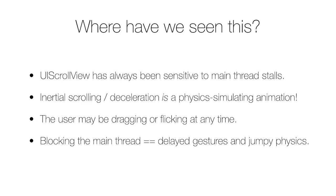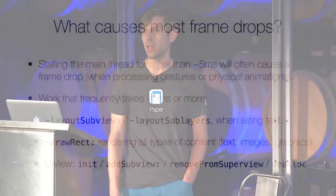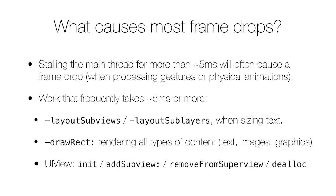Blocking the main thread inevitably results in delayed gesture processing and also jumpy physics. As a general guideline, you're looking at about five milliseconds in terms of how much time you have before you'll likely cause the device to drop a frame. That value varies a little depending on the complexity of your view hierarchy — basically there's other work the system has to accomplish in a 16-millisecond frame. It's best to benchmark this based on the slowest device you intend to support, which for most people is the iPhone 4 right now.